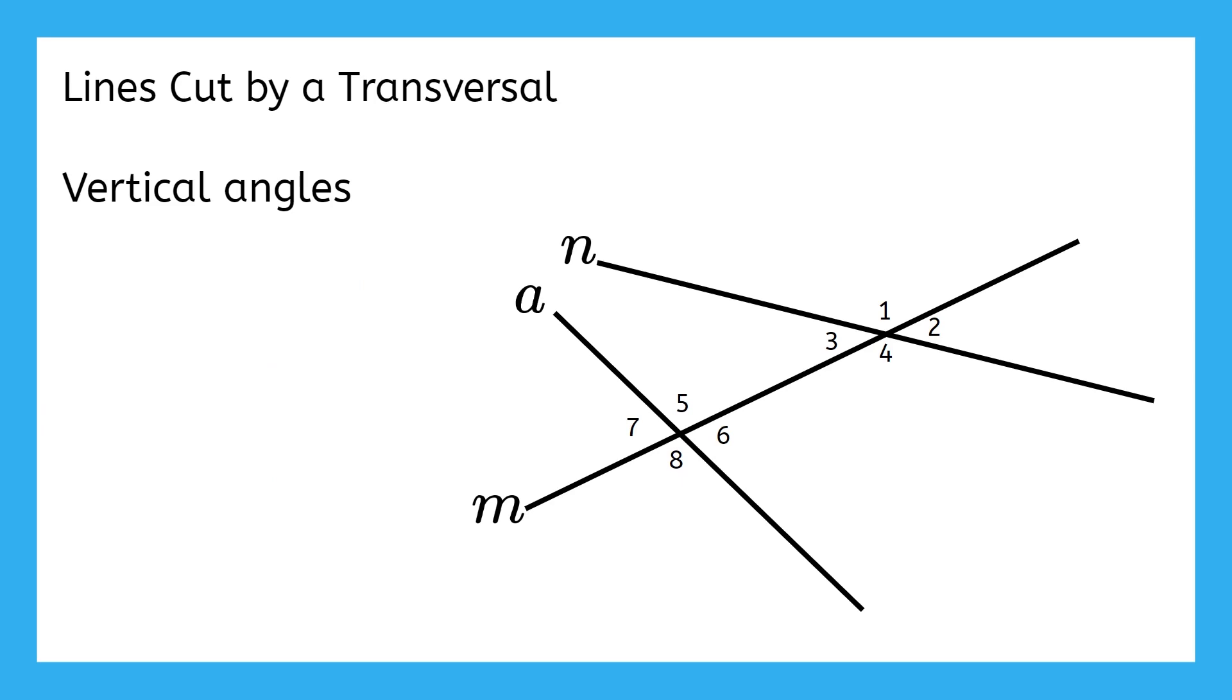Last but not least are vertical angles. Vertical angles don't only exist in this situation of lines cut by a transversal. They exist any time you have two lines intersecting. Don't let the name fool you. In this case, vertical doesn't mean up and down, it refers to the vertex of angles. Vertical angles are the two angles on opposite sides of an intersection. The vertices touch in the middle, but they don't share any rays. In the highlighted example, angle 7 and angle 6 are a vertical angle pair. There are three more pairs of vertical angles in this diagram. So pause the video now and try your best to identify the other three. How'd you do?